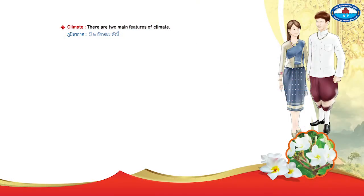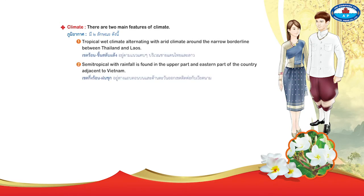Climate: There are two features of climate. First, tropical wet climate alternating with arid climate is found around the narrow borderline between Thailand and Laos. Second, semi-tropical climate with rainfall is found in the upper part and eastern part of the country adjacent to Vietnam.